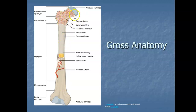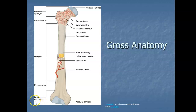The diaphysis is the tubular shaft that runs between the proximal and distal ends of the bone. This is the proximal epiphysis, closest to the point of attachment, and this is the distal epiphysis. I always remember: epiphysis starts with E, and so does ends — these are the ends — and then the diaphysis is that long shaft.